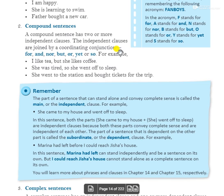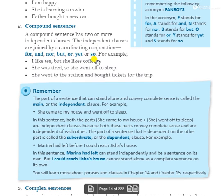Compound sentences have two or more clauses and we join them using coordinating conjunctions. The coordinating conjunctions used are: for, and, nor, but, or, yet, so. Using these conjunctions to join sentences makes them compound sentences.